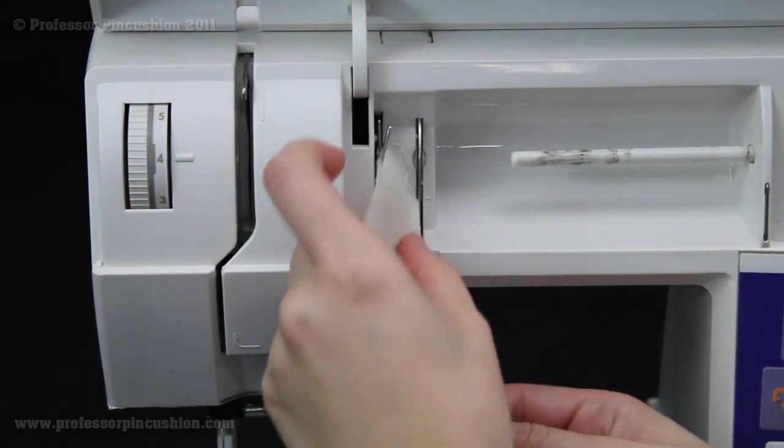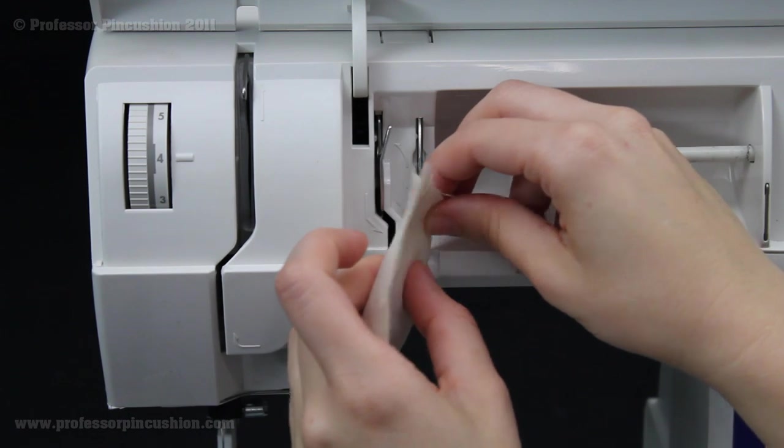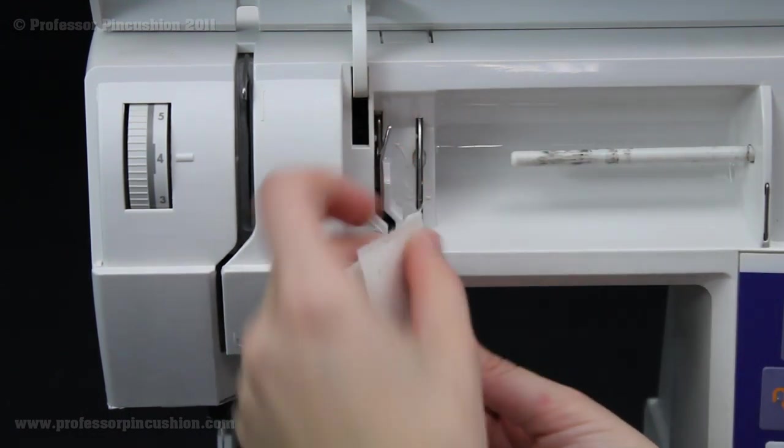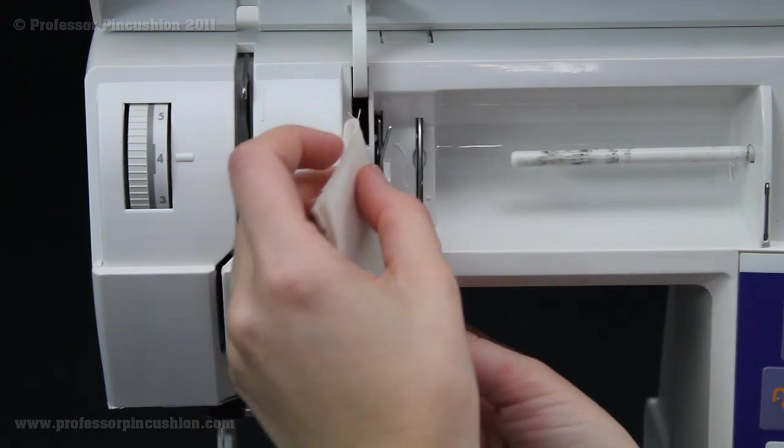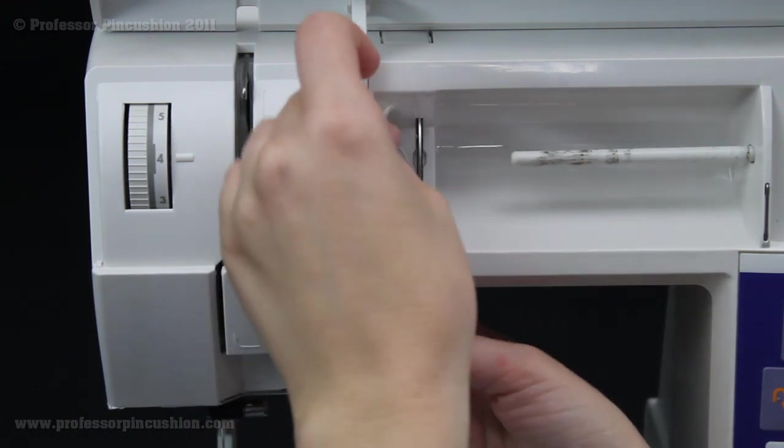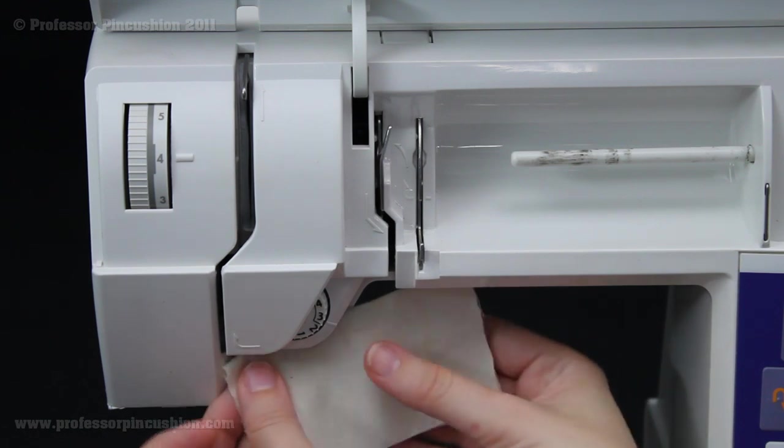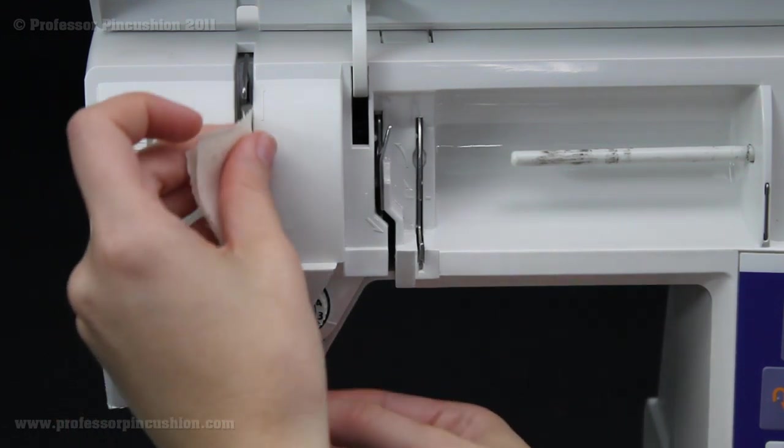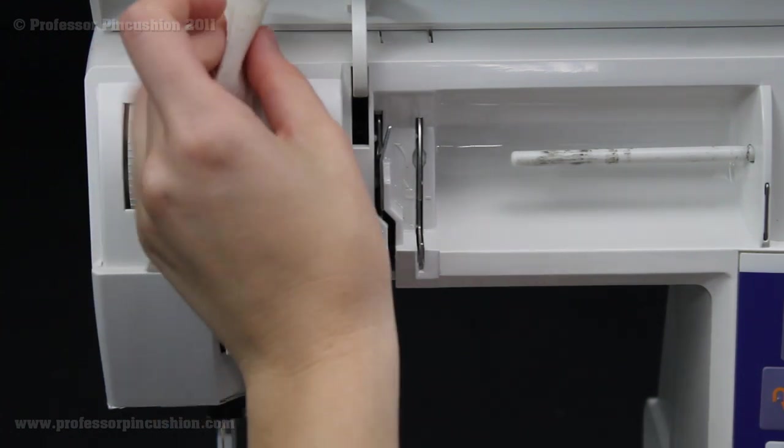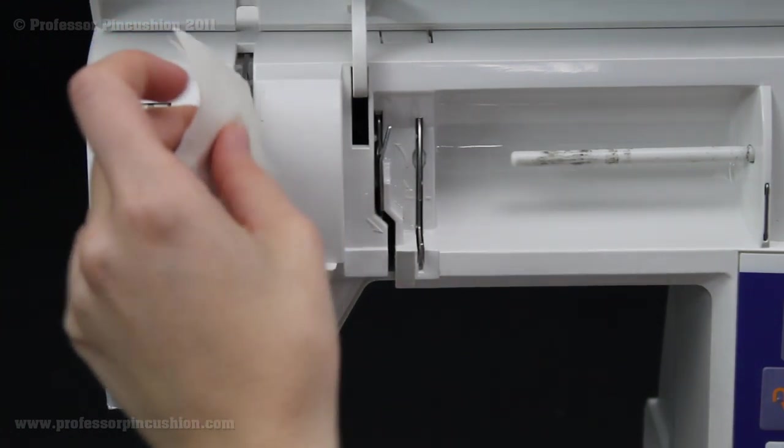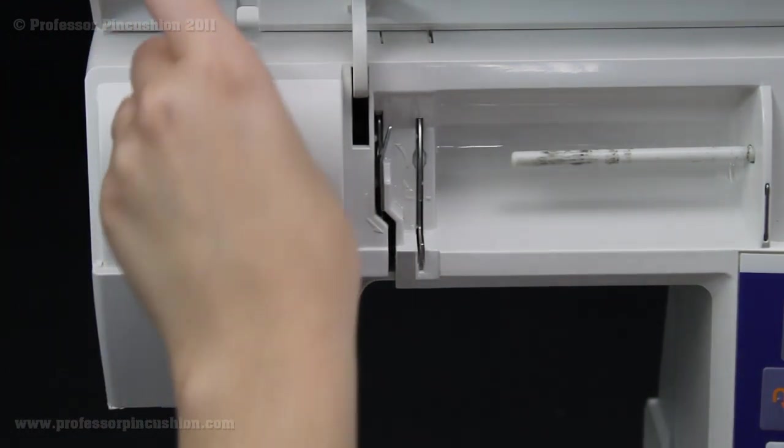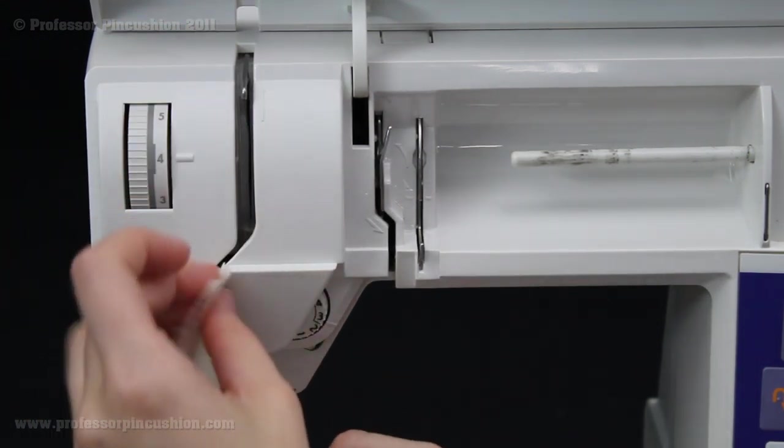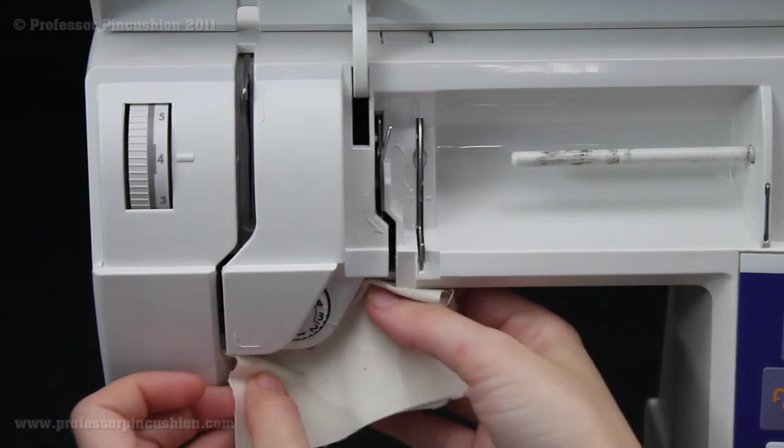And some people will use canned air to blow into it. If you do use that just make sure that you hold it at least four inches away because we don't want any of the liquid inside there to get inside the machine. The same with blowing into your machine. If you blow into your machine there's going to be moisture in your breath so that's not a good idea either, which is why I'm just using this dry piece of muslin to get in there and kind of dislodge all those thread fuzzies.